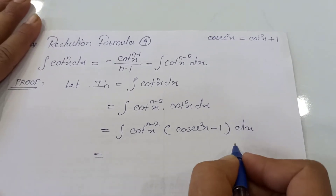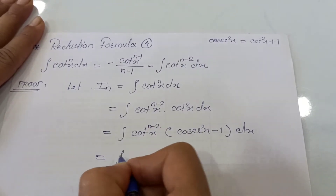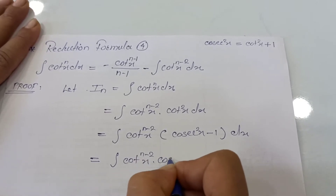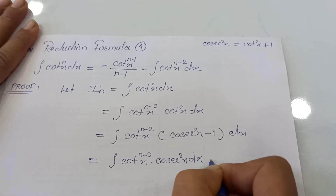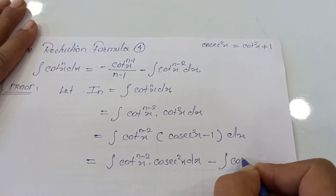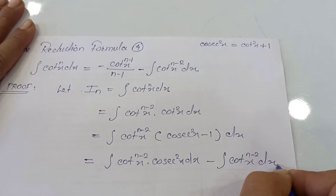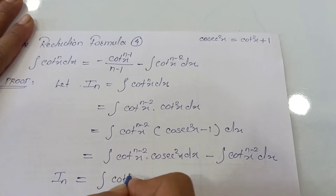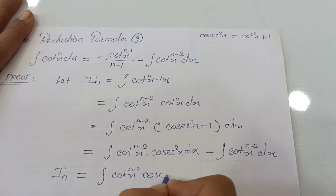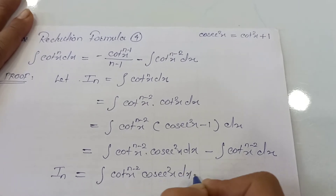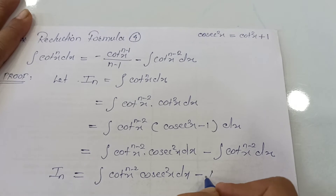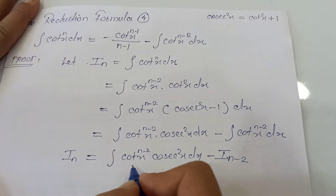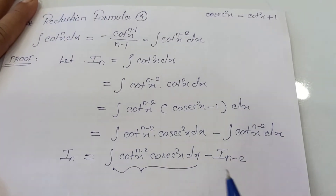Next, open the bracket and separate the integration sign. This gives integration of cot raised to n minus 2x times cosec squared x dx, minus integration of cot raised to n minus 2x dx. We write this second integral in terms of its notation as I_{n minus 2}.